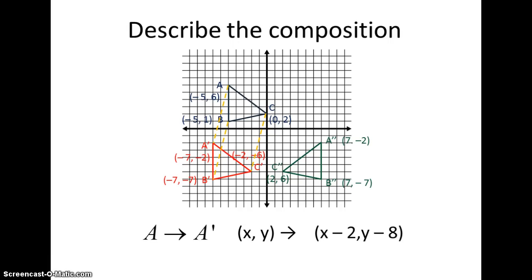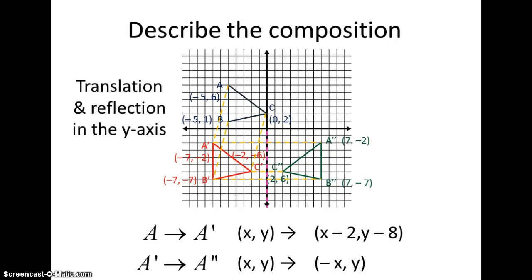Now looking from A prime to A double prime we're going to see that they're equal distances across from the Y axis here. So this is a reflection. And by looking at the actual ordered pairs we can see that the X value is now negative because it's in the third quadrant. So the mapping from (x, y) becomes (-x, y). And the general description of this composition would be a translation with a reflection in the Y axis.